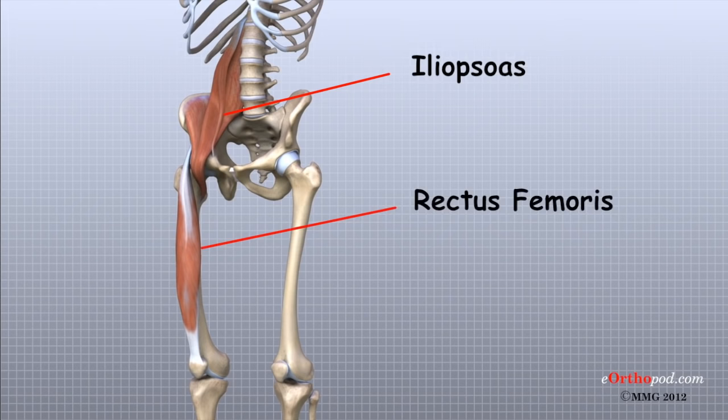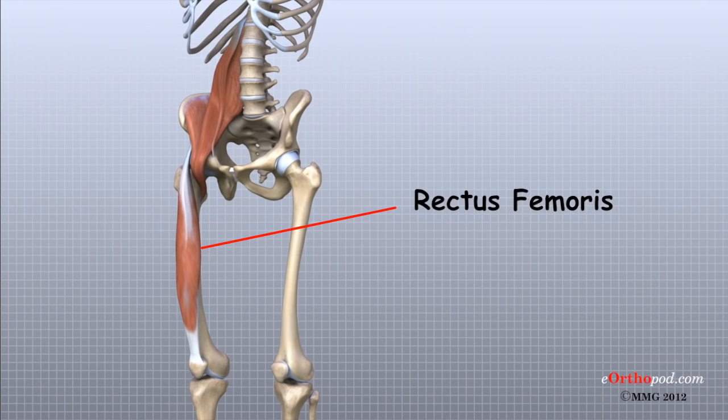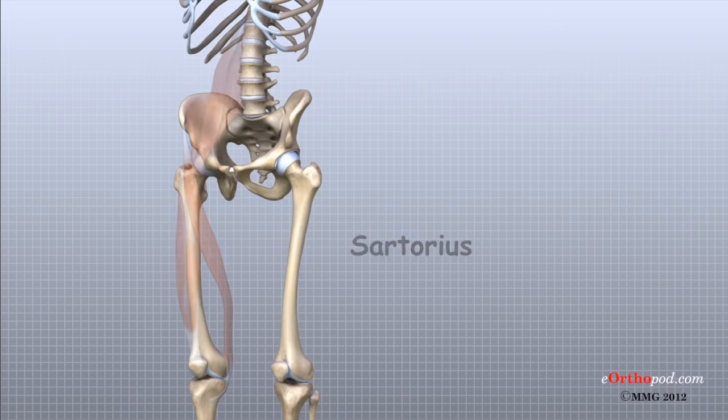The iliopsoas muscle is a very deep muscle that begins attached to the lower spine. It travels out of the pelvis to connect on the inside edge of the upper femur. The rectus femoris is one of the quadriceps muscles, the large group of muscles on the front of the thigh. There is also a small, thin, strap-like muscle called the sartorius muscle that runs from the pelvis across the knee and connects to the upper tibia just below the knee joint.